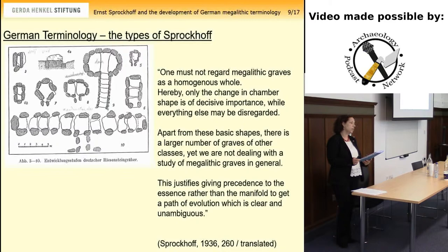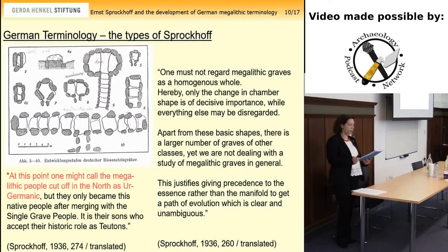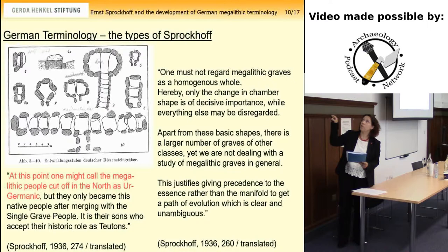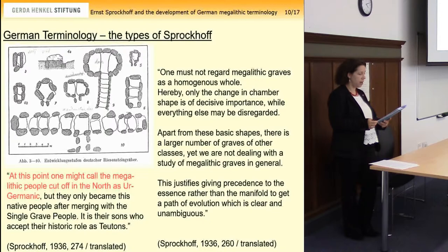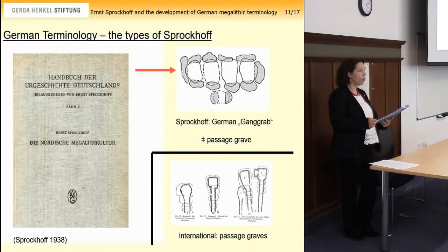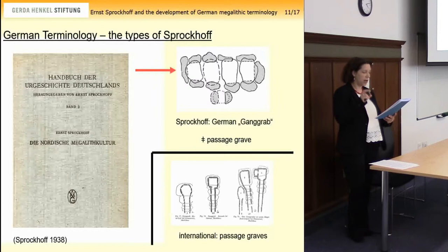From that point onwards, the Ganggräb in German terminology only referred to a rectangular chamber with a passage in its long side, while in Spain, France, Great Britain, Ireland, Denmark and Sweden, the words tomb of the corridor, dolmen allées, passage grave, gandraro or ganggrift — used to, and still do — refer to polygonal, round or angular chambers with a long passage located on any side. Sprokhoff himself never used international developments like 'gallery grave,' which would fit better to his Ganggräb shape, to indicate the German monuments too.